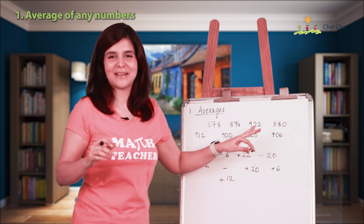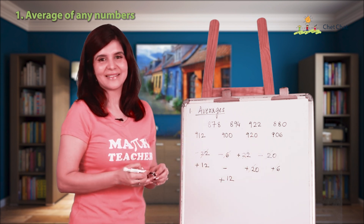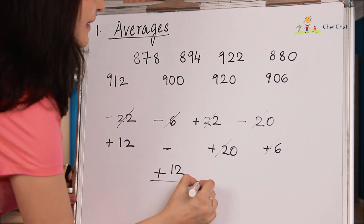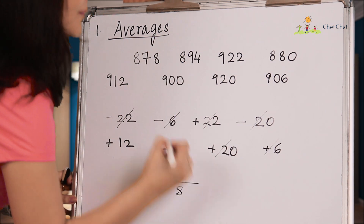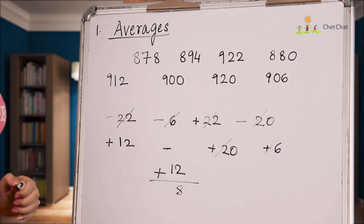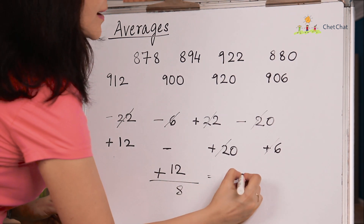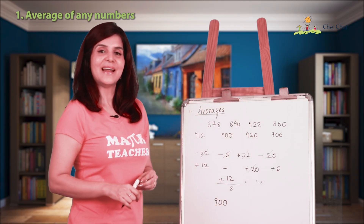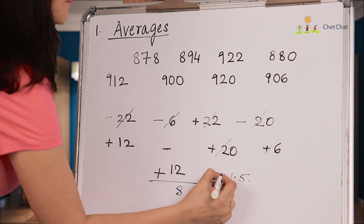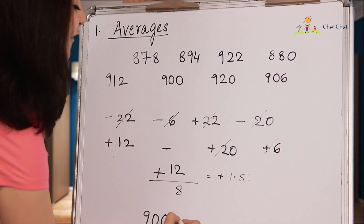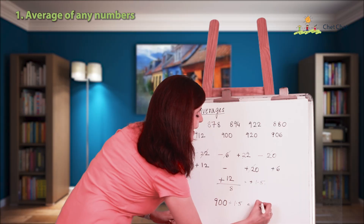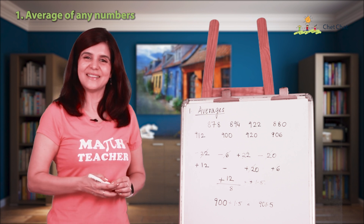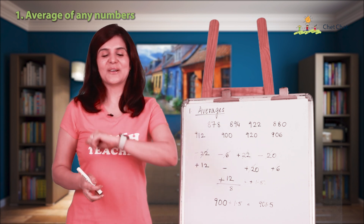Those numbers happened to cancel neatly, but they may not always. You add up all the differences and divide by eight — the count of numbers — giving 1.5. Since I started with 900 and got a +1.5, I simply add 1.5 to 900. Your average is 901.5. Easy!